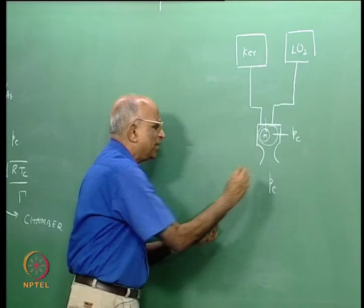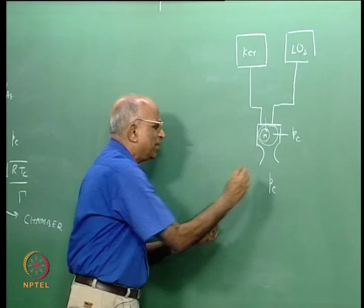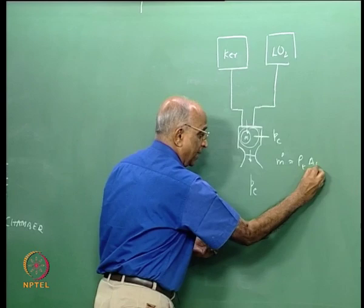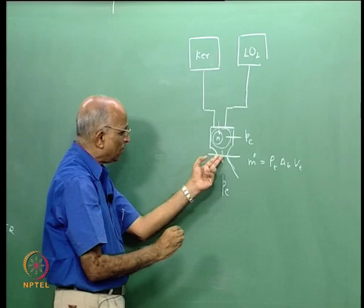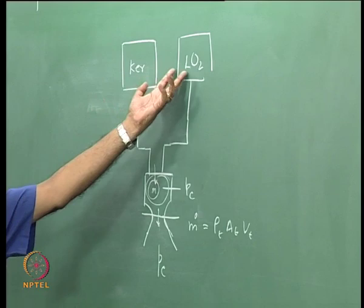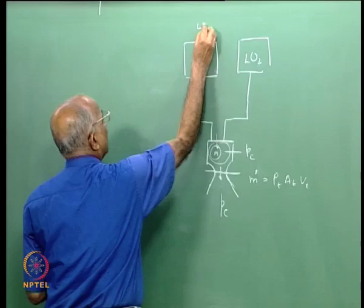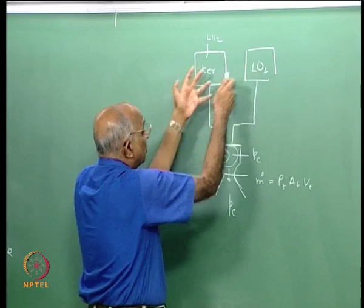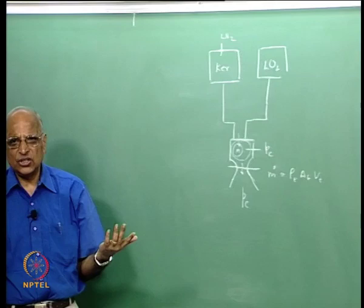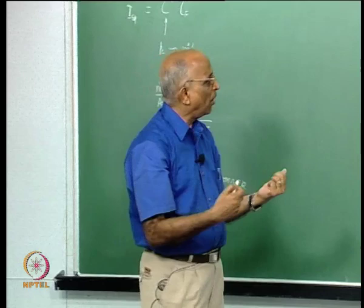C-star is representative of the chamber only — we looked at mass flow up to the throat. So C-star represents the chamber's ability to generate high-pressure gas when mass is flowing. If instead of kerosene and oxygen I use liquid hydrogen and liquid oxygen, the C-star could be higher — making that combination preferable. Typically, C-star is around 2000 to 3500 m/s. Lower-performing propellants give a lower value; highly energetic propellants give a higher value.